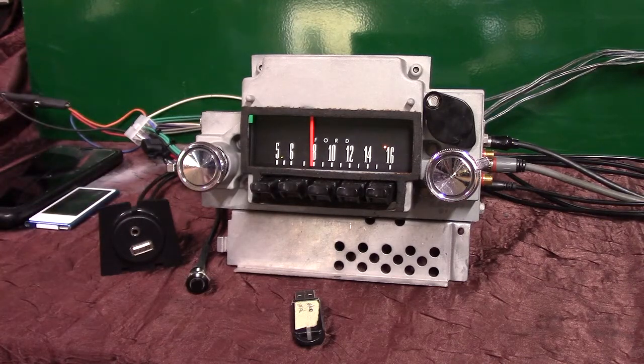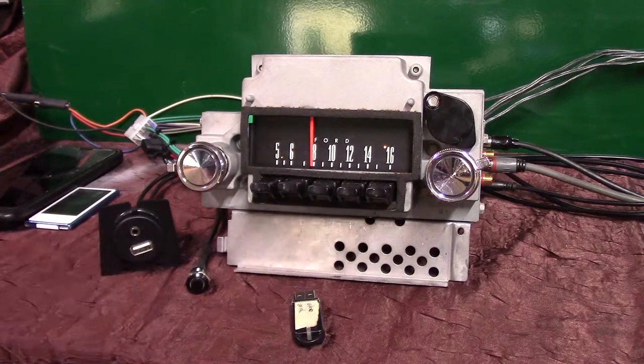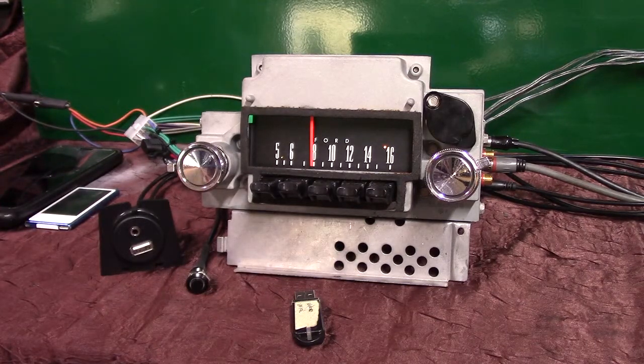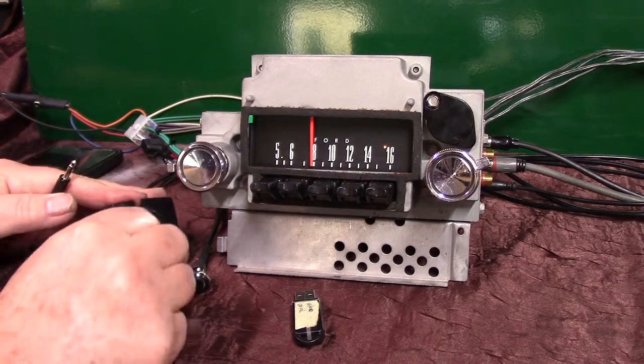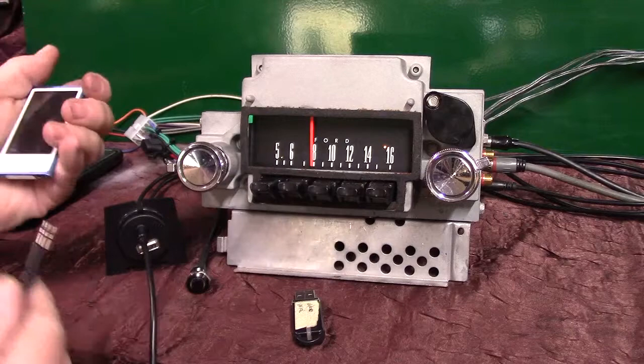The next thing we're going to do is auxiliary in. You'll get a male-to-male cord like this. All you do is pull it out and plug it in the little harness here. You can hide that in the glove box if you want to because you can operate it from out here.